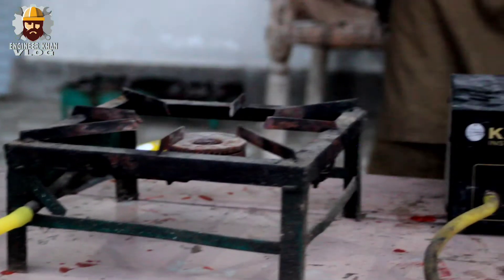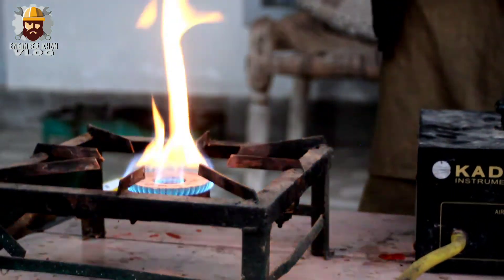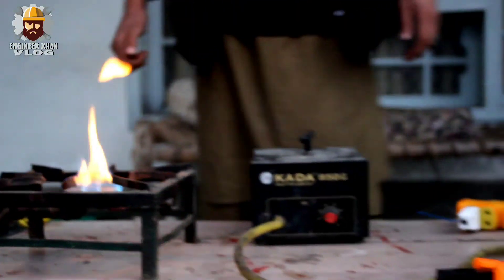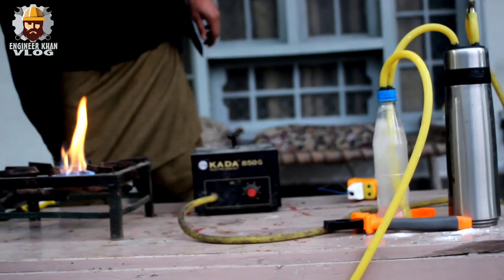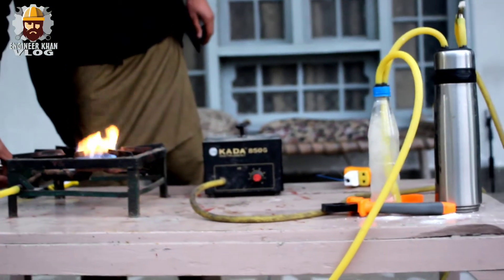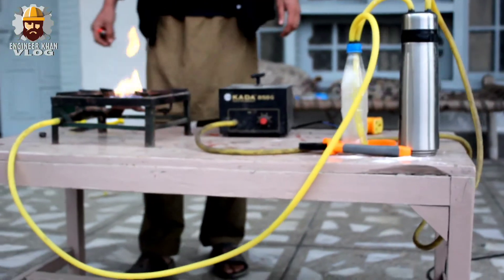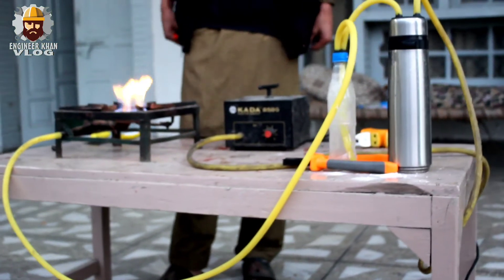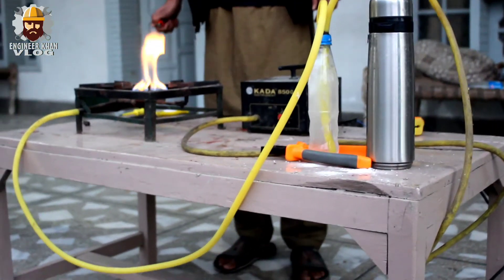You can light the stove, and it will burn like company-provided LPG gas. The whole process is very simple, efficient, and affordable. A liter of petrol can light your stove for 3 to 4 hours continuously.